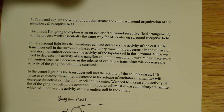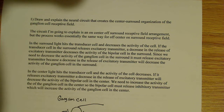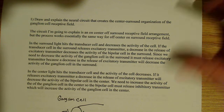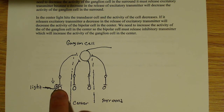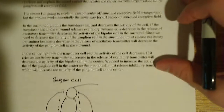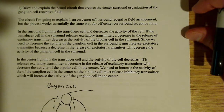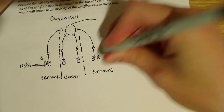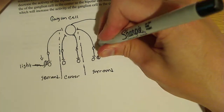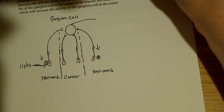In the surround, light hits the transducer cell and decreases the activity of the cell. If the transducer cell in the surround releases excitatory transmitter, a decrease in the release of excitatory transmitter decreases the activity of the bipolar cell in the surround. I have light hitting here, it releases excitatory transmitter, and there's a decrease in the release of excitatory transmitter — decreasing the activity of this bipolar cell. And that goes the same for the other surround cell over here — this is also excitatory, and a decrease in excitatory transmitter decreases the activity of the bipolar cell in the surround.